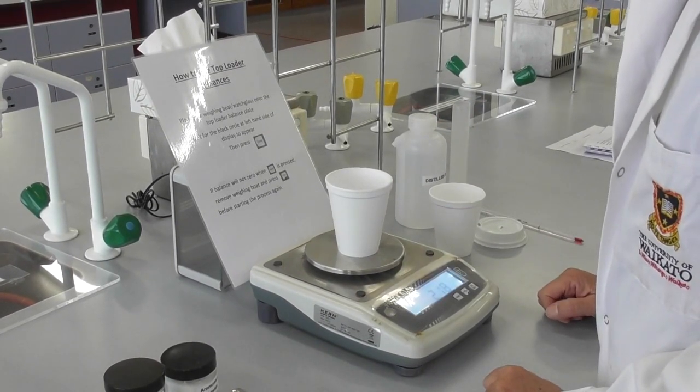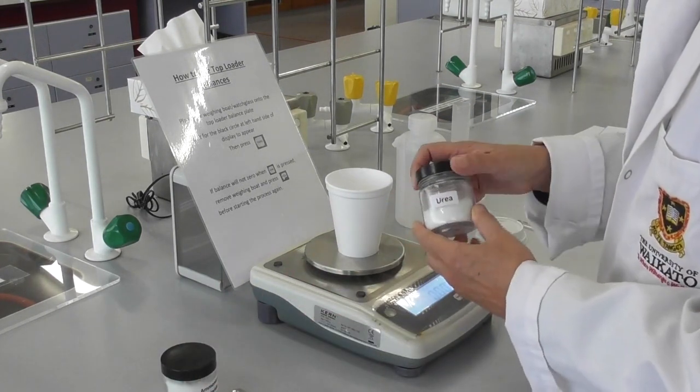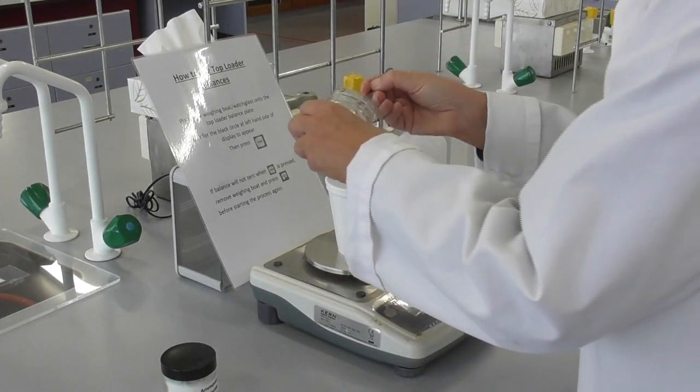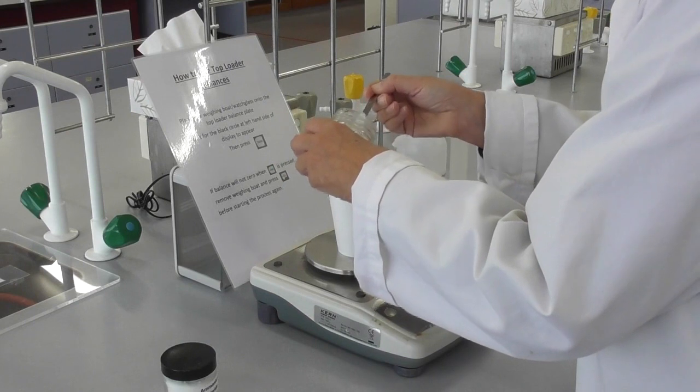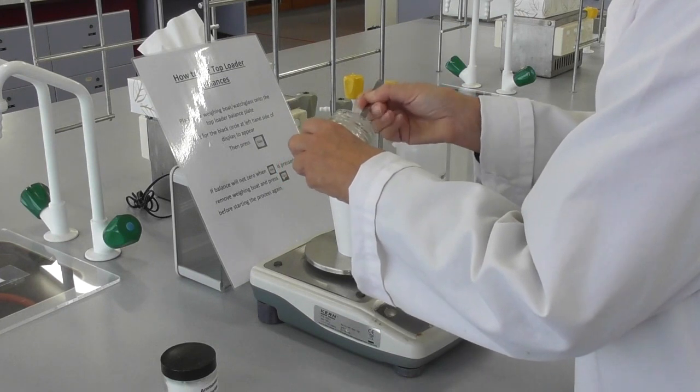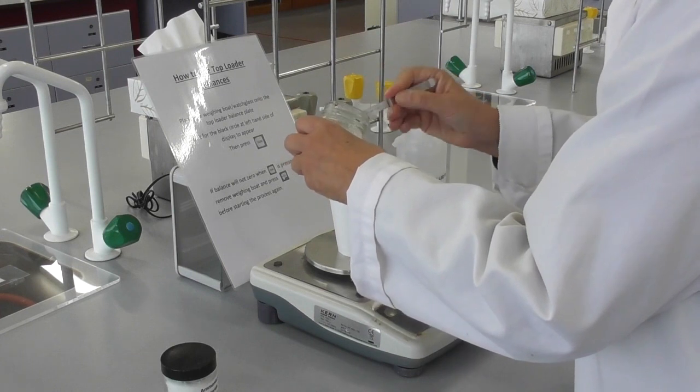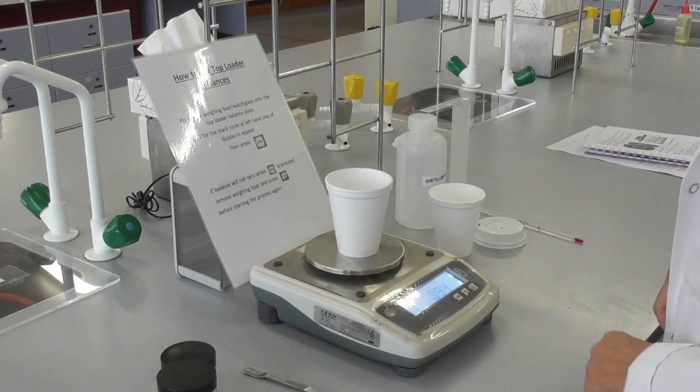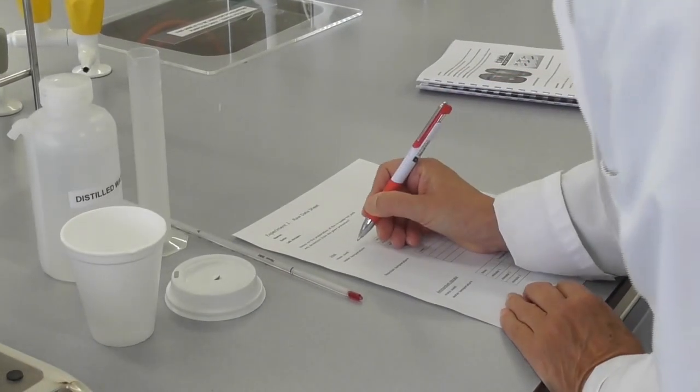In this part we begin by weighing out between 8 and 10 grams of urea into a styrofoam cup. It doesn't matter whether we weigh out 8 or 9 or 10 grams of urea, but it's important that we make note of the exact mass, so we write this down onto our raw data sheet straight away.